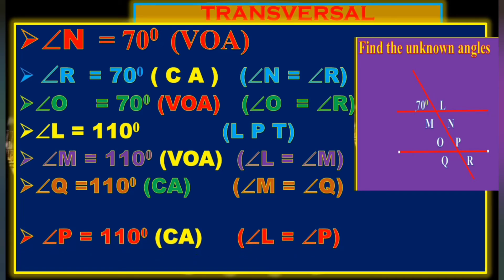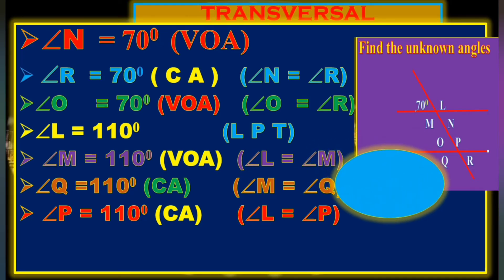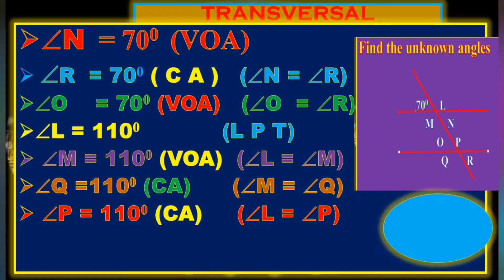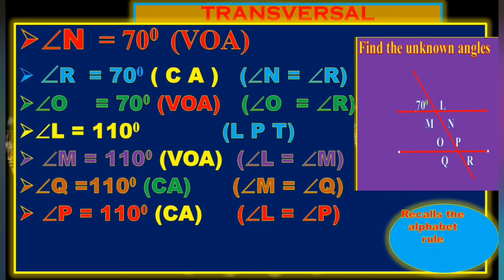So L equals 110 degrees. You can see the corresponding function level: L equals 110 degrees, and P equals 110 degrees as well.